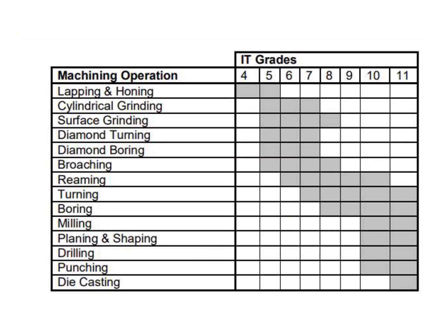These are the IT grades. IT grade 4 means that with this machining operation we can achieve close tolerances. For IT grades 4 and 5, we should use lapping and honing. For IT grades 5, 6, and 7, we should use cylindrical grinding. For IT grades 5 through 8, we can use surface grinding. These are the machining operations listed according to their IT grades. The larger the IT grade number, the less fine the tolerance we can achieve.